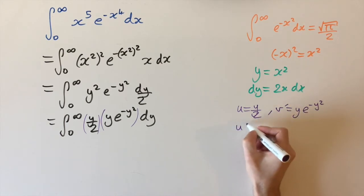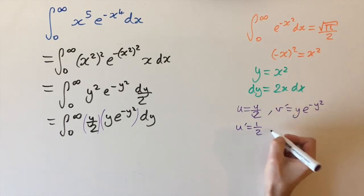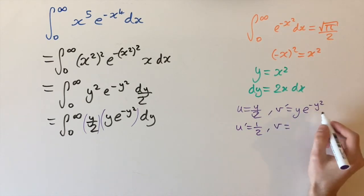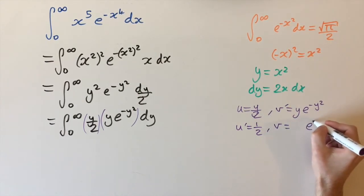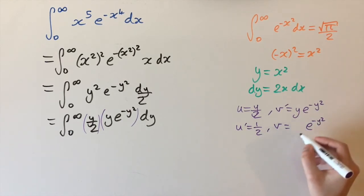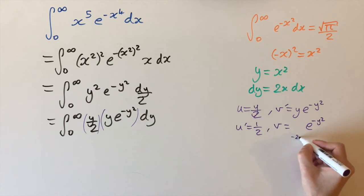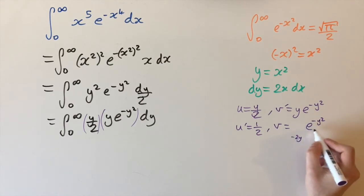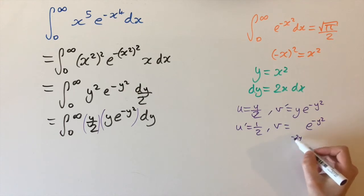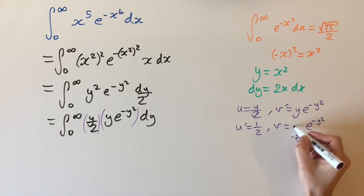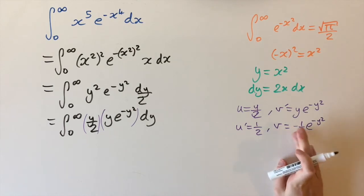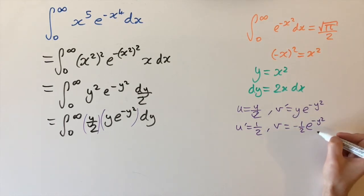Differentiating u, we get u' equal to one half. For the antiderivative of v', think about differentiating e to the minus y squared — this gives a factor of minus 2y times the exponential. So the antiderivative of y e to the minus y squared is minus one half times e to the minus y squared, since the minus 2 and minus one half cancel.